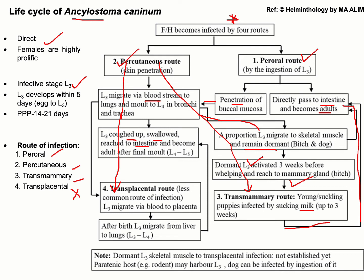In the transplacental route, during percutaneous infection some L3 move to the offspring via the placenta. After birth, molting from L3 to L4 occurs in the liver or lungs. Afterwards these stages are coughed up, swallowed, and reach the intestine, becoming adult parasites after the final molting.